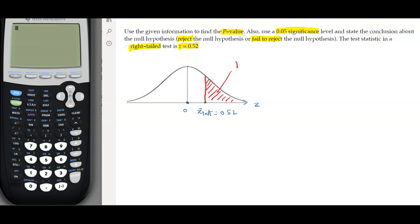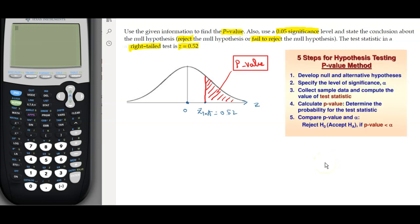And this right here can be the area of the p-value. Now what we need to do is to follow the steps of the hypothesis testing. The method we're going to be using is the p-value method.